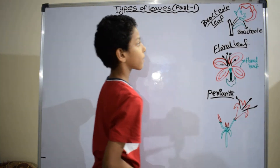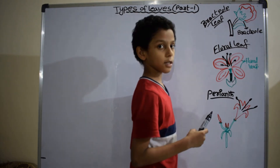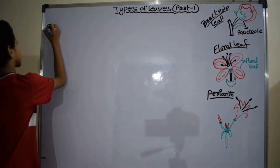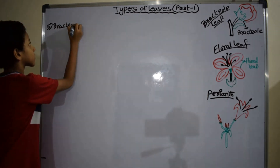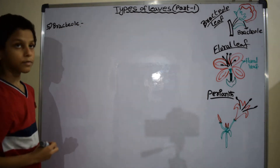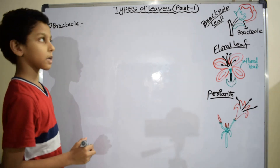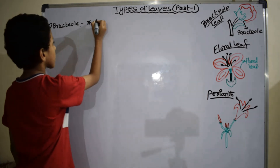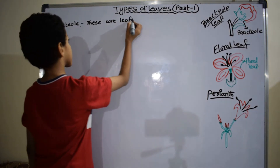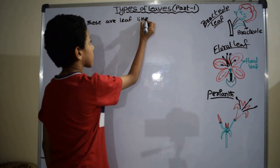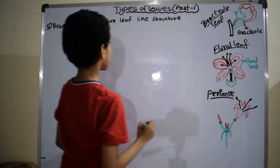Fifth one is bracteole. This is the leaf-like structure for non-perissal flowers.